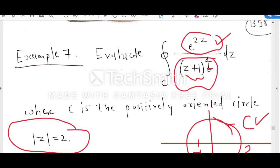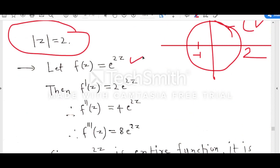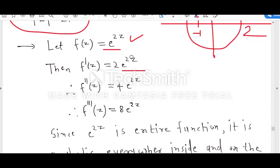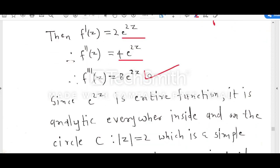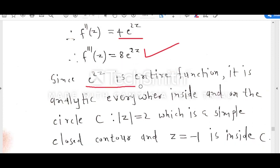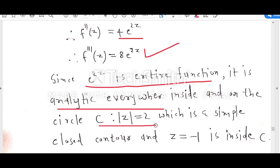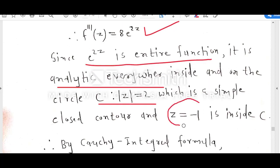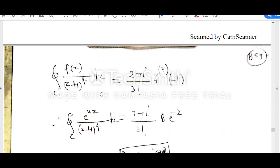Because the power here is 4, we have to consider up to the 3rd derivative. With f(z) equal to e raised to 2z: the first derivative is e raised to 2z times 2, the second derivative is e raised to 2z times 4, and the third derivative is 8 times e raised to 2z. Since e raised to 2z is an entire function, it is analytic everywhere inside and on the circle mod z equal to 2, and z equal to minus 1 is inside C. By Cauchy integral formula, the integral of f(z) divided by z plus 1 to the power 4 equals 2πi upon 3 factorial times the third derivative at z₀.